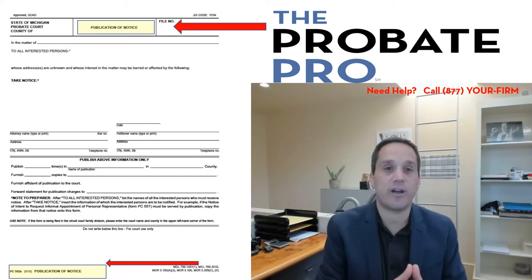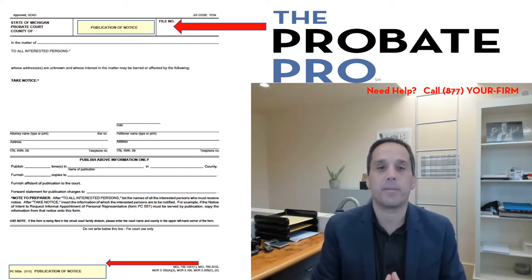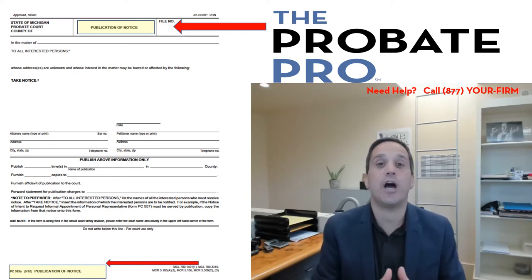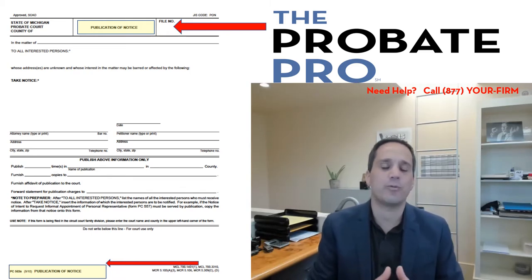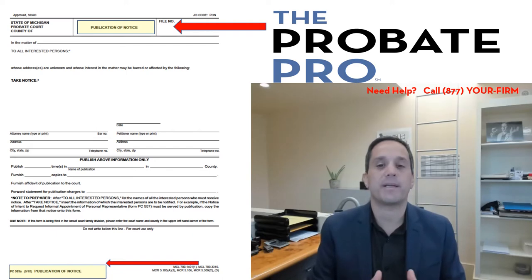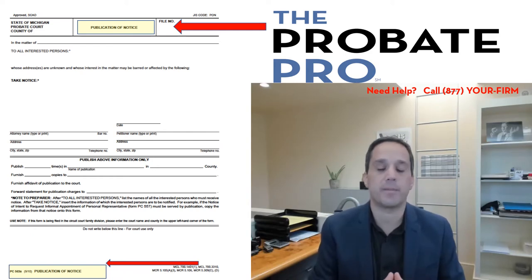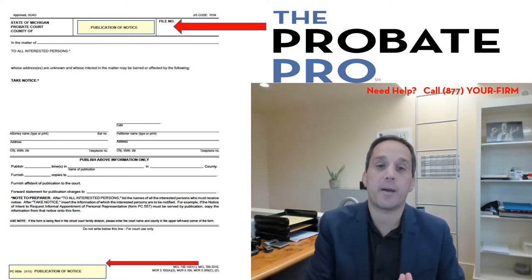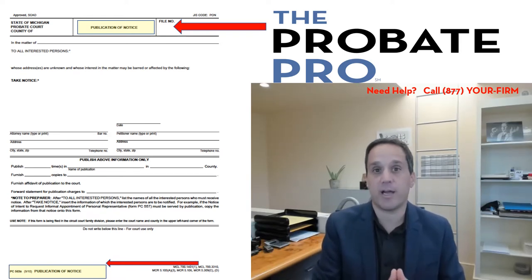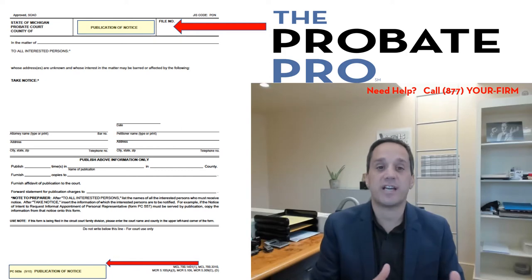First is the publication notice. This is done at the beginning of a probate estate after a letter of authority is issued. You publish in the legal news for any unknown creditors. This is a publication that most people don't read, but people who are creditors do read these publication notices and look to see if there is a match between an estate that has been opened and a debt that may be owed to their company.